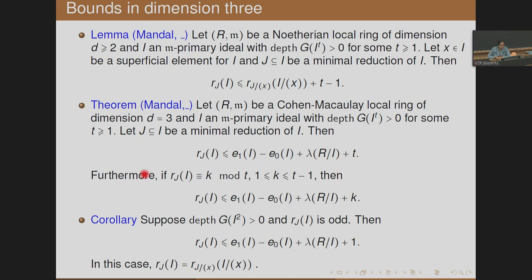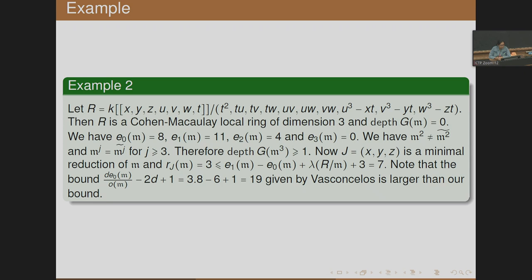We can further reduce the bound: if we know the reduction number is K mod t for some K between 1 and t−1, then t can be replaced by K. A particularly useful corollary is that if depth of G(I²) is positive and the reduction number is odd, then Rossi's bound holds. An example illustrates this: depth of G(M³) ≥ 1 gives an upper bound of 7 for the reduction number via our result, whereas Vasconcelos' bound gives 19 — so our new bound is significantly better.